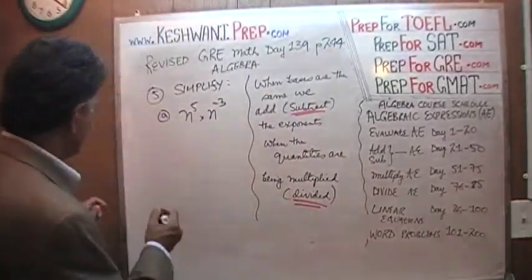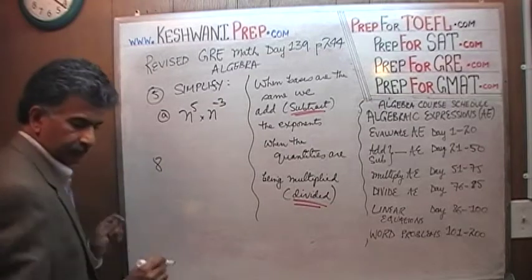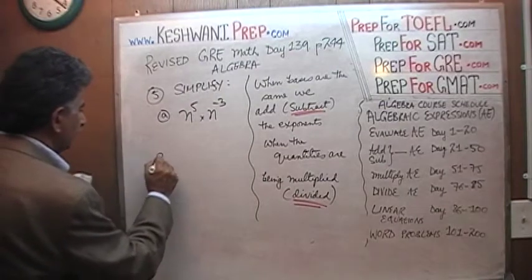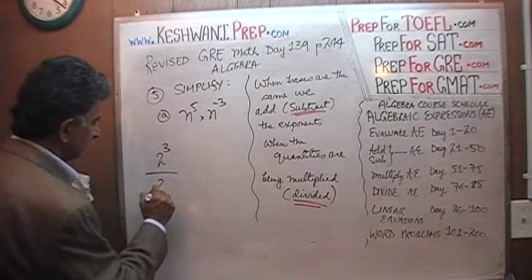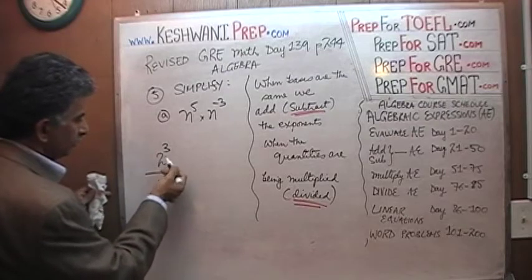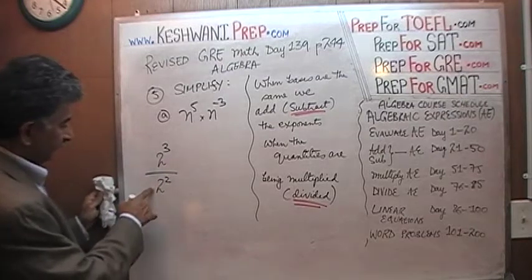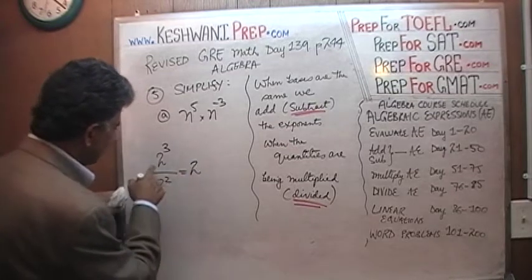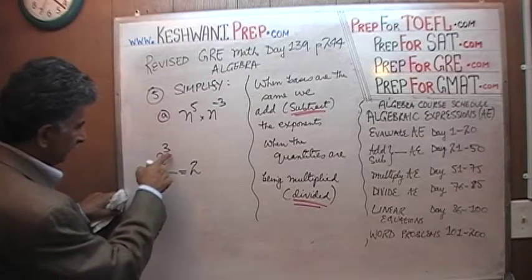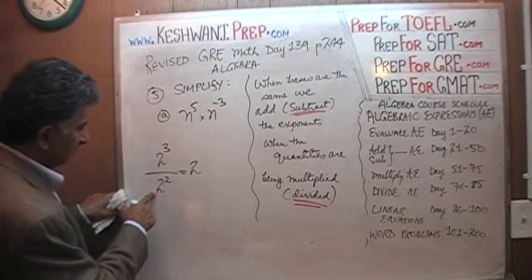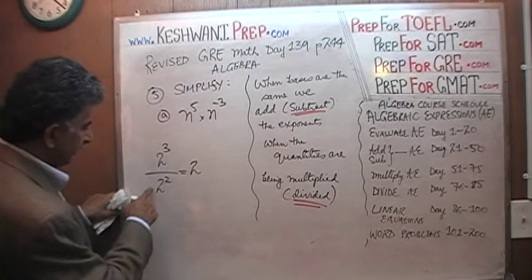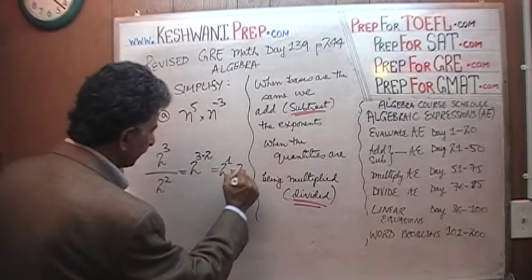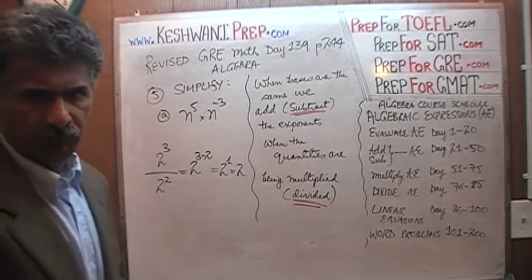For example, 2 to the 3rd power divided by 2 to the 2nd power. We know 2 to the 3rd is 8, and this is 4, so 8 divided by 4 is 2. Since the bases are the same — both base 2 — and the quantities are being divided, we subtract the exponents: 3 minus 2 gives us 2 raised to 1, which is 2.